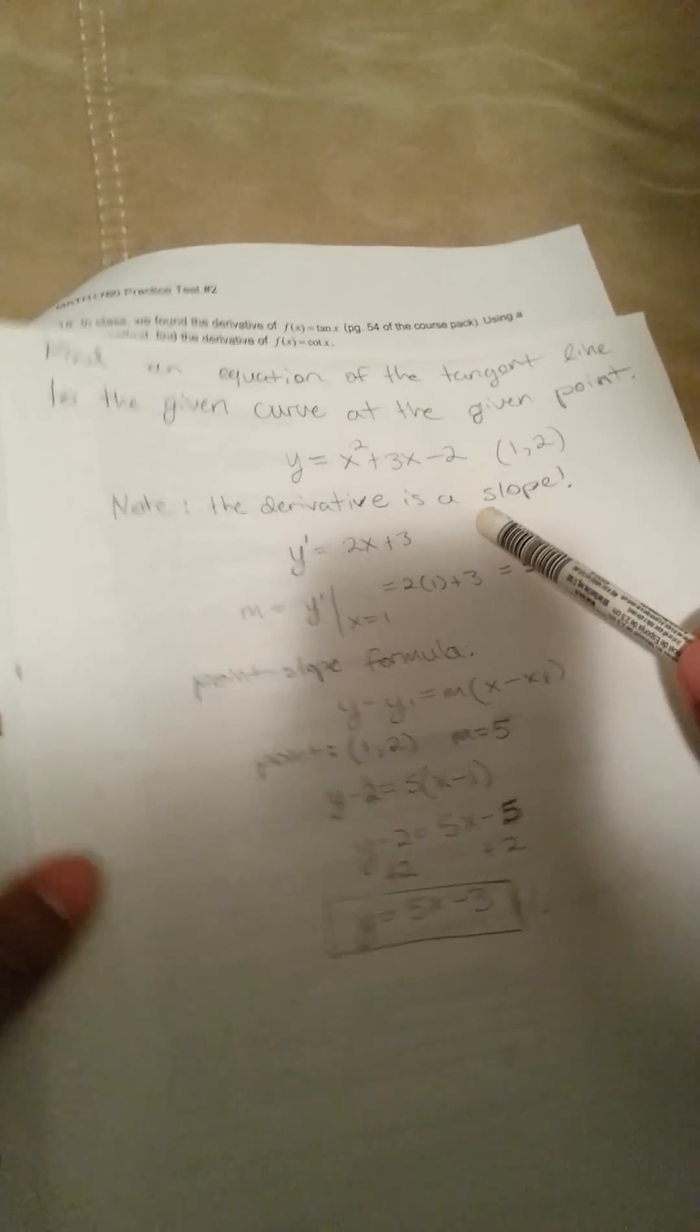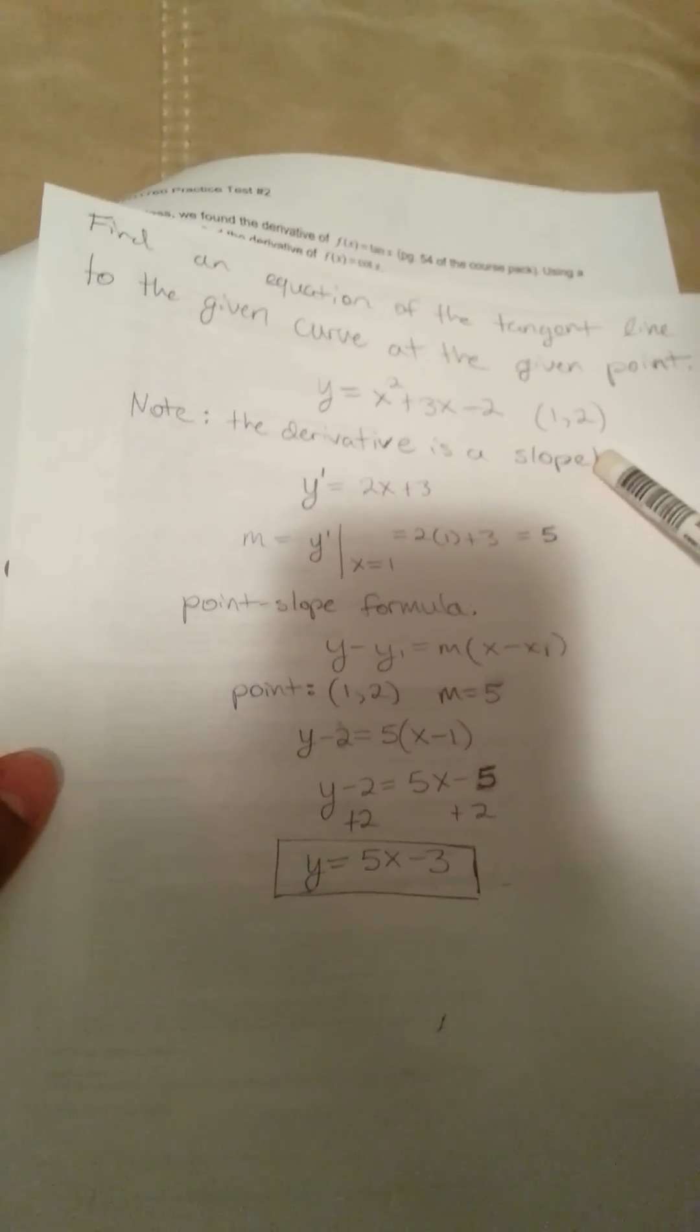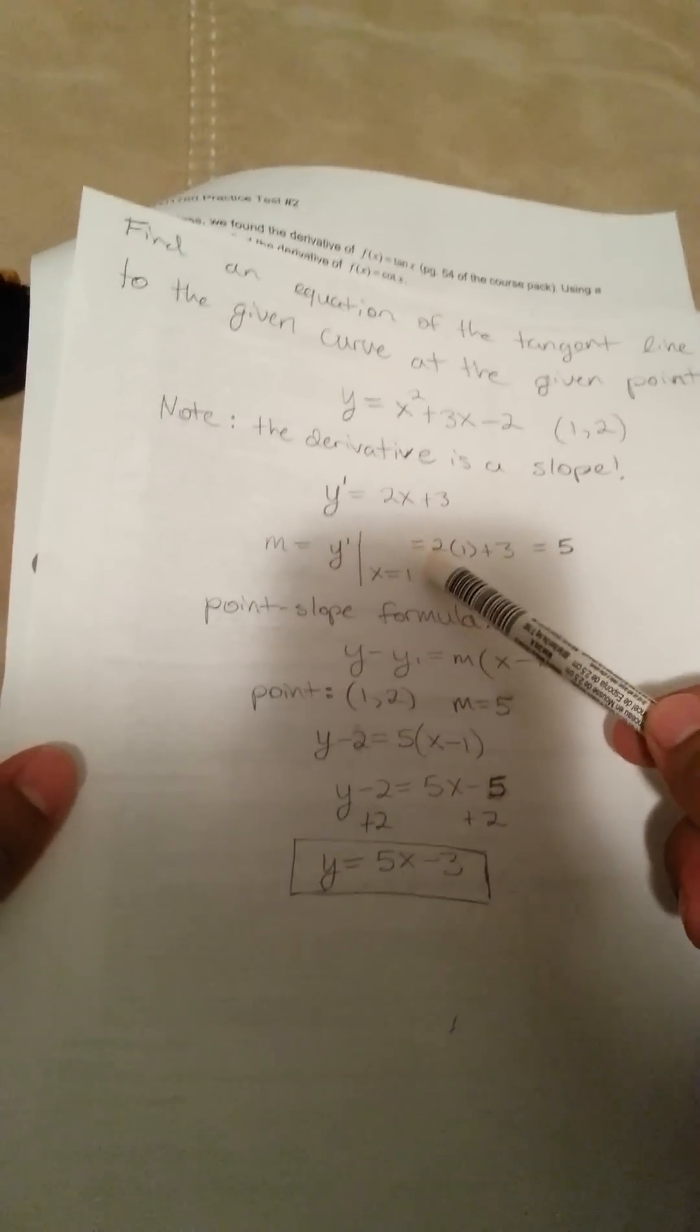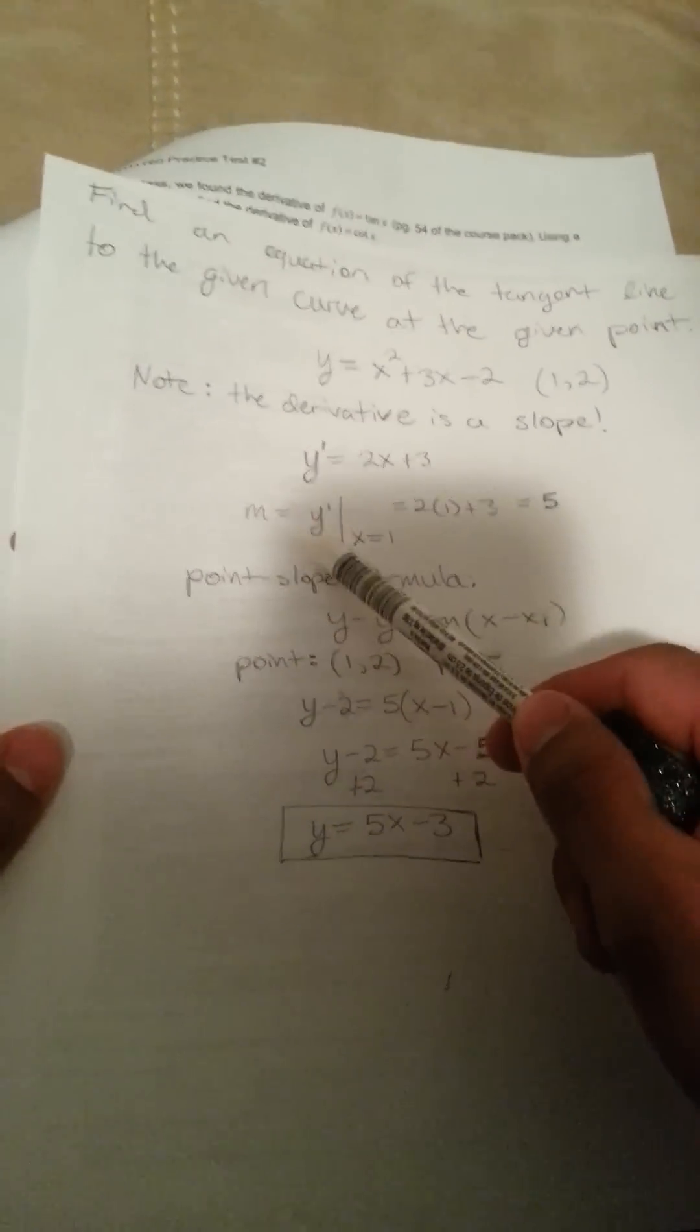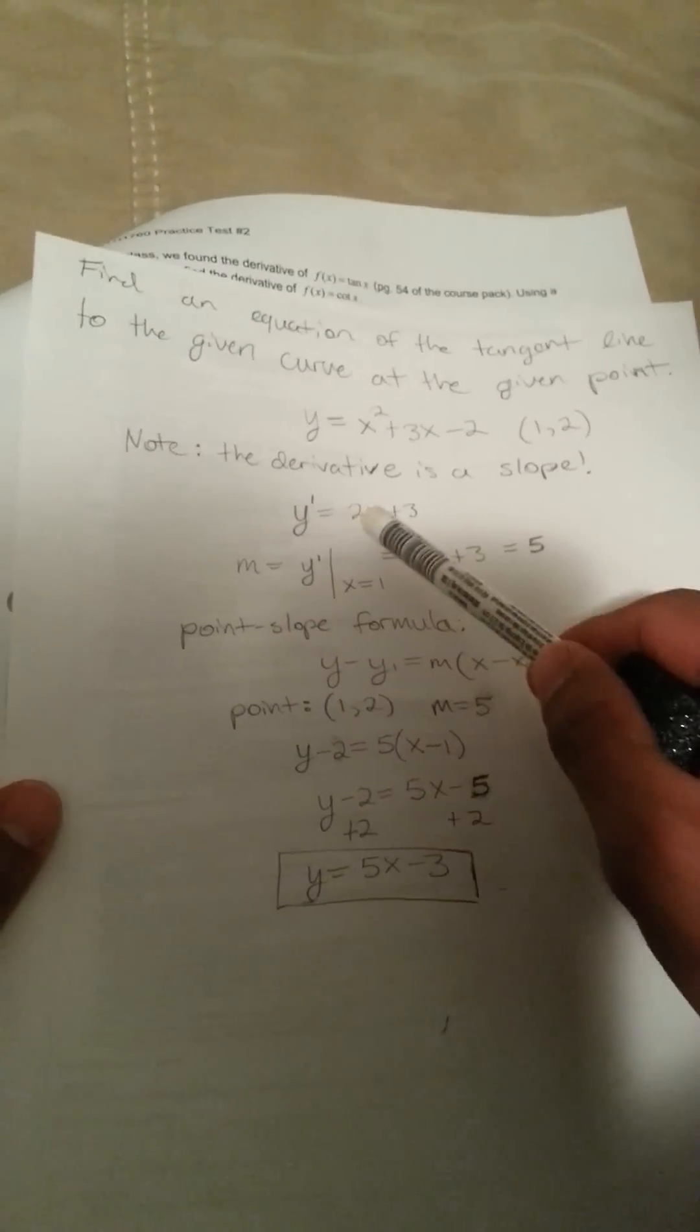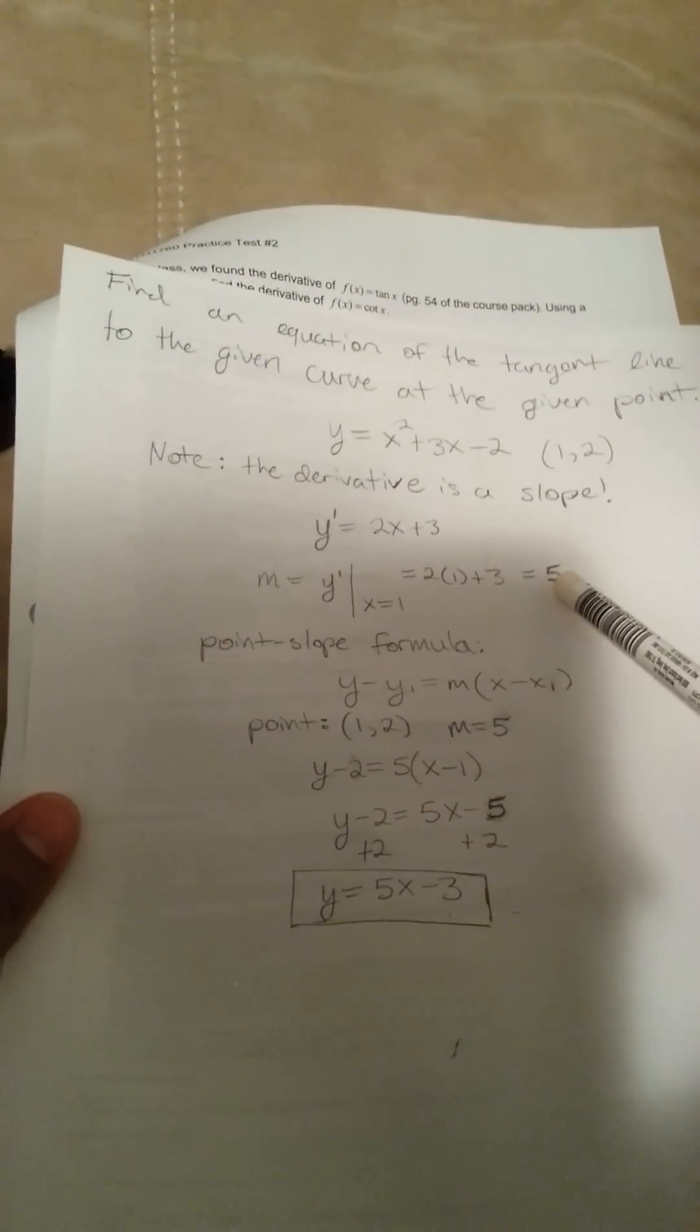Now, this is a pretty straightforward problem. We're given our x and y value for the point. So, we'll take our x value, and we'll just plug it into the derivative we just found. So, we'll have m, which is our slope, equals y prime, and then x equals 1, and that will be plugged into what we found earlier, and we get 2 times 1 plus 3, which gives us a slope of 5.